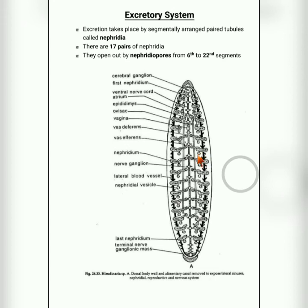Nephridia are paired structures — you can see this nephridia and another nephridia; they are paired and arranged all over the body. From the 6th segment to the 22nd segment, 17 pairs of nephridia are found. These nephridia open to the exterior through nephridiopores, which are small holes.